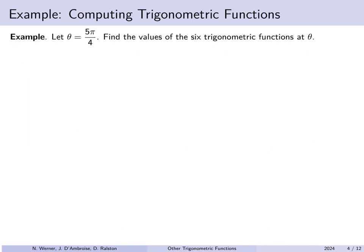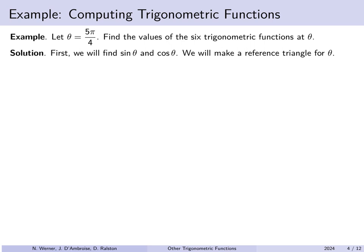So let's suppose that theta is 5π/4. Let's find the value of all six standard trigonometric functions of this angle. First we're going to find sine and cosine by making a reference triangle. Here's the unit circle. 5π/4 is bigger than 4π/4, which is π, and would point straight left. And then it's an extra quarter π beyond that, which is half of a quadrant. So we're somewhere here in quadrant 3.